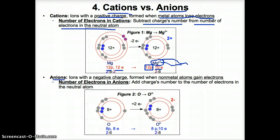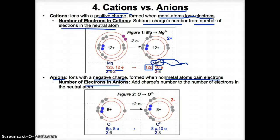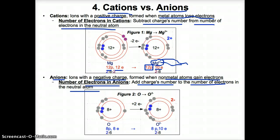Anions are ions with a negative charge that form when nonmetal atoms gain electrons. Nonmetals are to the right of the steps on the periodic table. To find the number of electrons in anions, take the anion's negative charge number and add it to the number of electrons in the neutral atom.